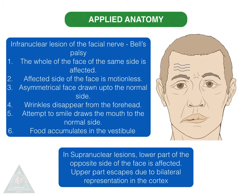Coming to the applied aspect, the infranuclear lesion of the facial nerve is the phenomenon we term Bell's palsy. The whole of the face on the same side is affected — the affected side is motionless, the face is asymmetrical and drawn up to the normal side, wrinkles disappear from the forehead, and attempts to smile draw the mouth to the normal side. Food accumulates in the vestibule. These symptoms occur because of the loss of action of the facial muscles.